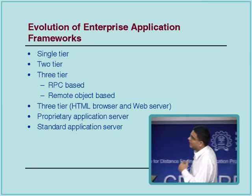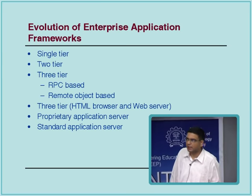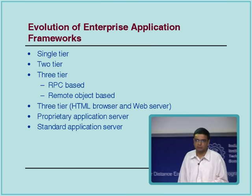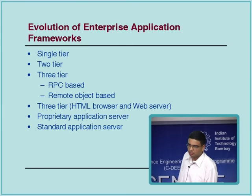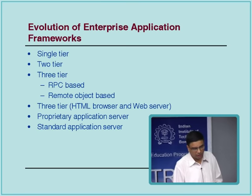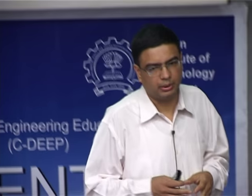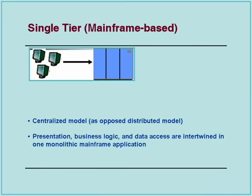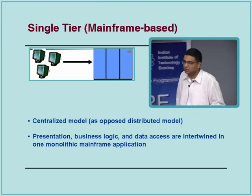Finally we are at this notion of application servers — that's the technology used today in the industry to build applications. Initially there were proprietary application servers, examples being Tuxedo and DCOM, and then things got standardized somewhere along the way through an open standards process. So we'll briefly discuss each one of these. Single tier — everything is monolithic, everything sits in one place. These are mainframe-based applications where all three layers — business logic, presentation logic, data access logic, and the database itself — sat on the mainframe.